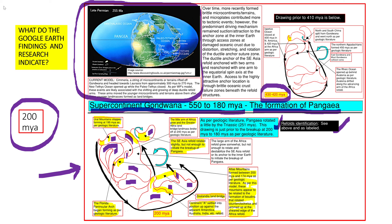The little arm of Africa now grew, and Greater Adria land masses broke off at about 240 million years ago as per geologic literature. Now there's another little arm developing. The land arm of the Africa refold grew somewhat, but not enough to rotate and destabilize the Southeast Asia refold or its anchor to the inner earth, or initiate the breakup of Pangea.